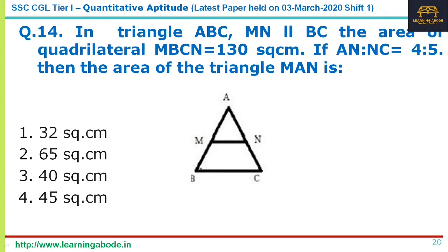Question number 14: MN is parallel to BC in this triangle. AN is 4 and NC is 5, which means AC is equal to 9. The ratio is 4 to 5, so I'm just taking it as 4 and 5, and AC as 9. Or you can take 4x, 5x, and 9x — whichever way you want.